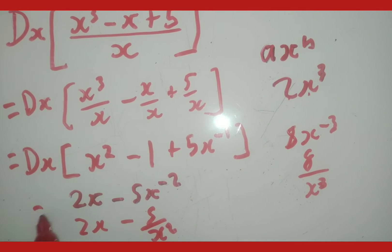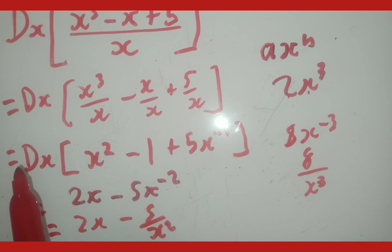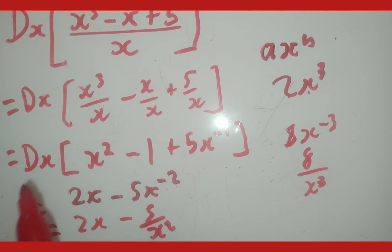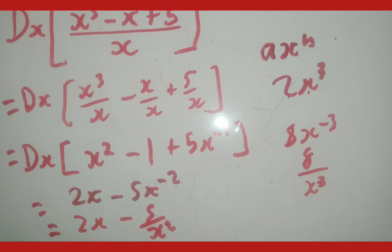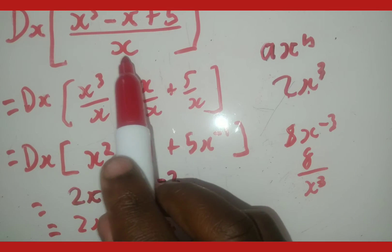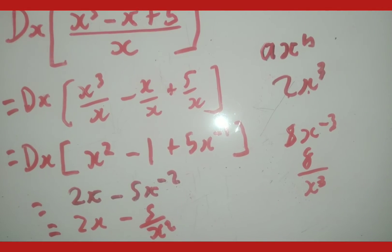Note: the equals sign does not come after dx — that's a mistake some students make. The equal sign comes before it. So just remember: if you see one denominator, you split it. If you see two or more terms in the denominator, you have to factorize.